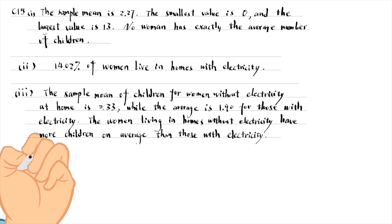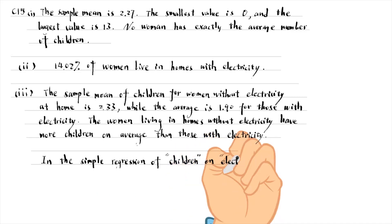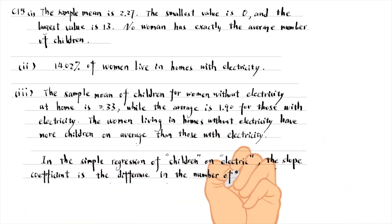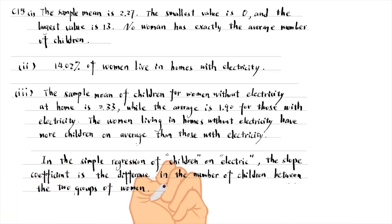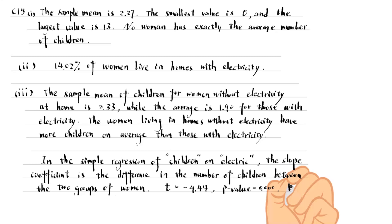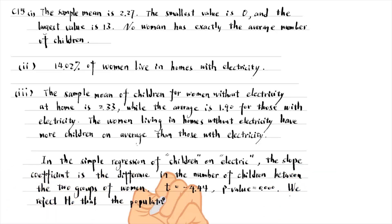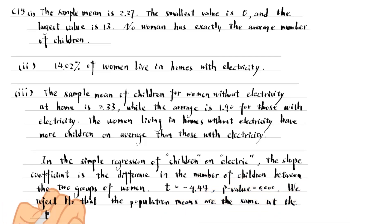To test whether the population averages are the same, we can run a simple regression of children on electricity. The slope coefficient is the difference in the number of children between the two groups of women. We can read its standard error, t-statistic, and p-value from the result window. The t-statistic is minus 4.44 and its p-value is 0 to 3 decimal places. We reject the null hypothesis that the population means are the same at the 1% level. We can obtain the same result in Stata using the command t-test with the by option.